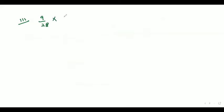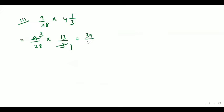The third part is given as 9/28 into 4 whole number 1/3. It can be written as 9/28 into 13/3. It can also get cancelled and can be written as 39/28, which can also be written as 1 whole number 11/28. Both answers are correct.